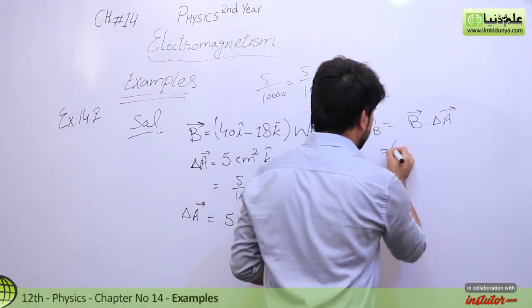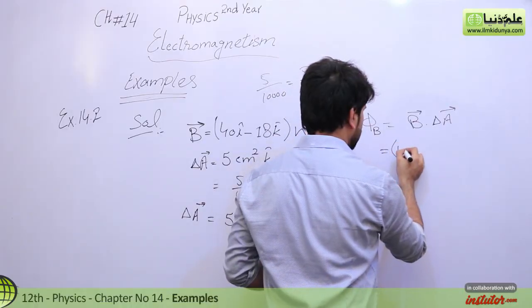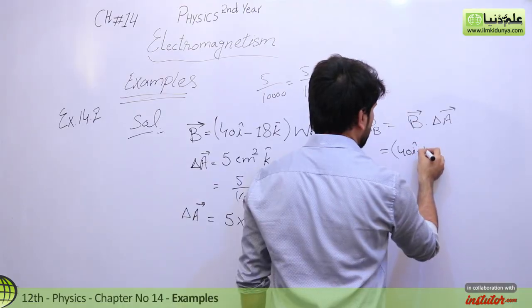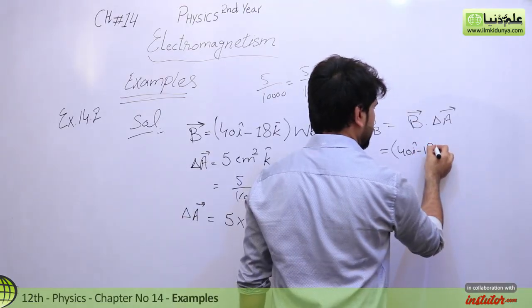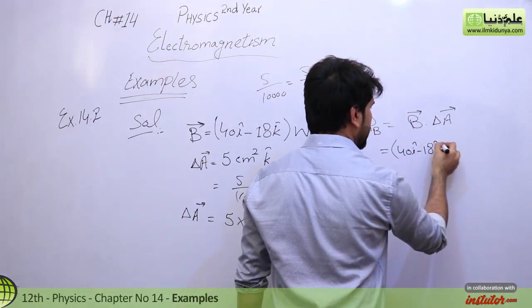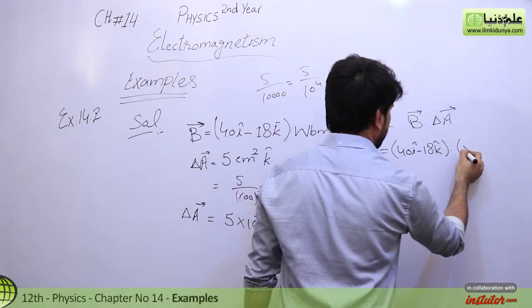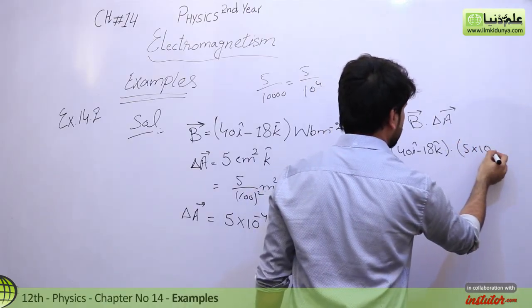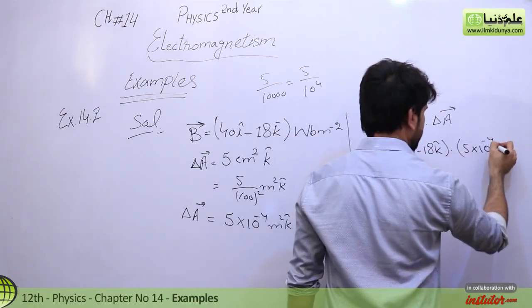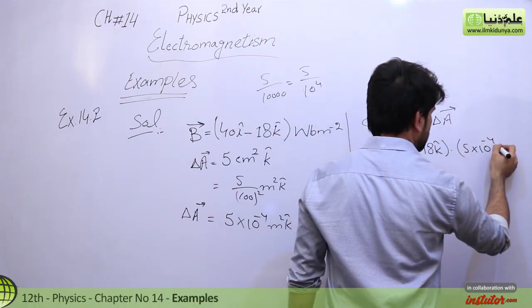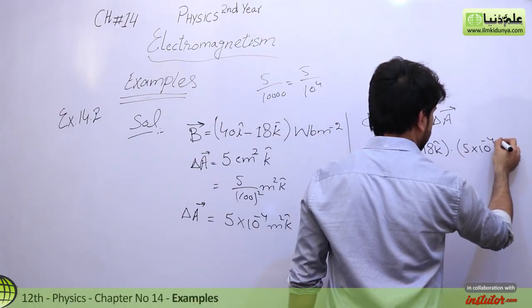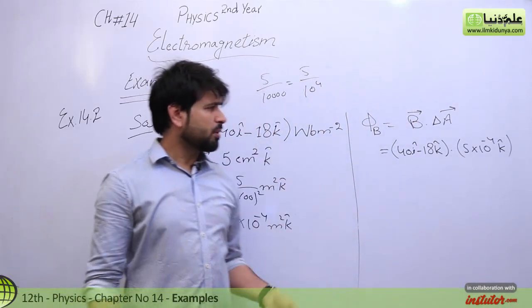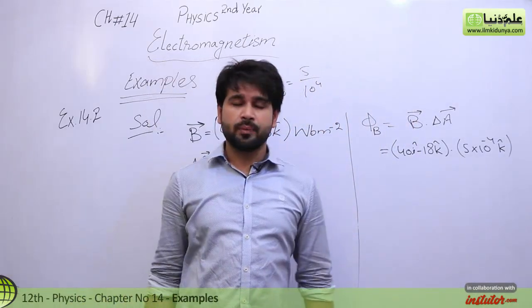Writing the values: B given is 40 î minus 18 k̂, dot product with 5 times 10 raised to the power minus 4 k-cap. The area vector is also in the k direction.